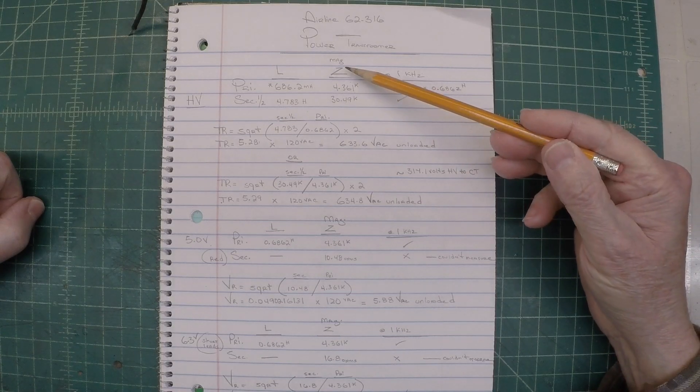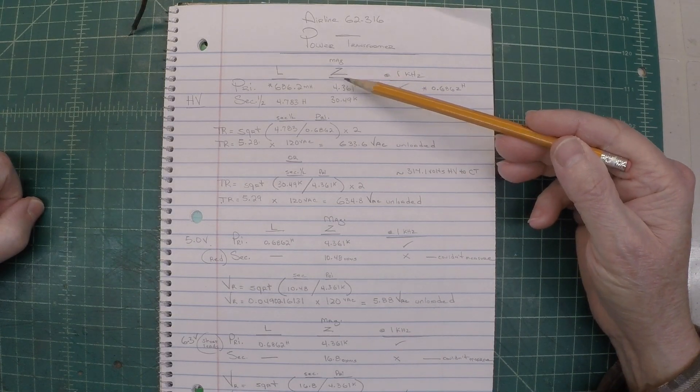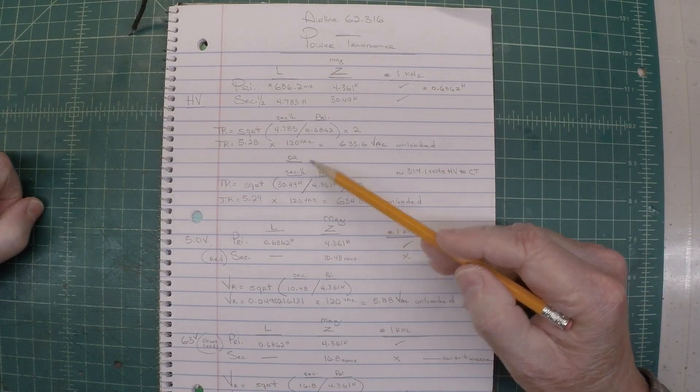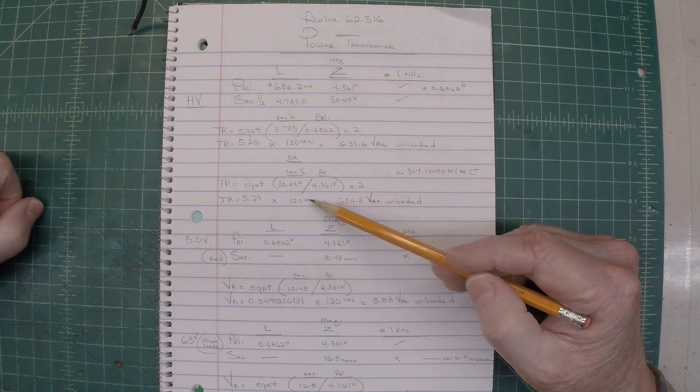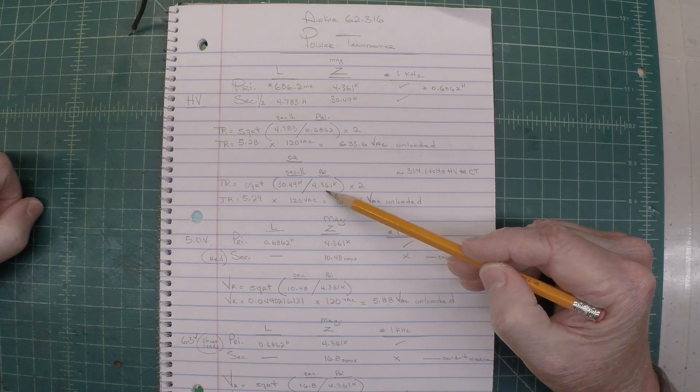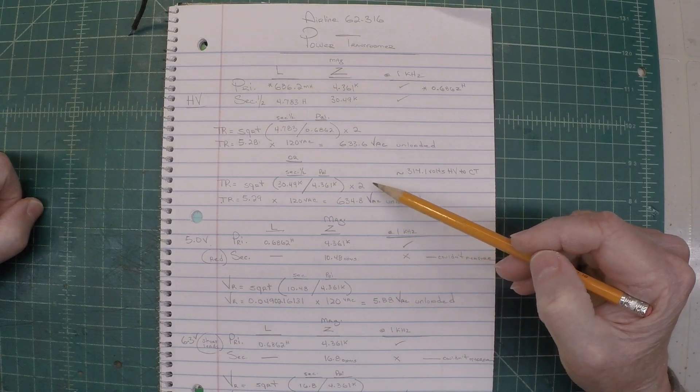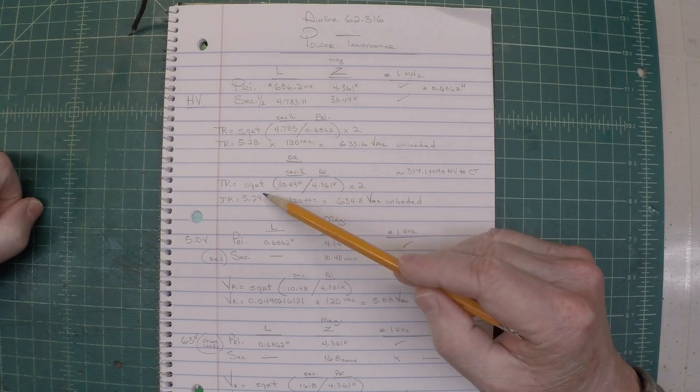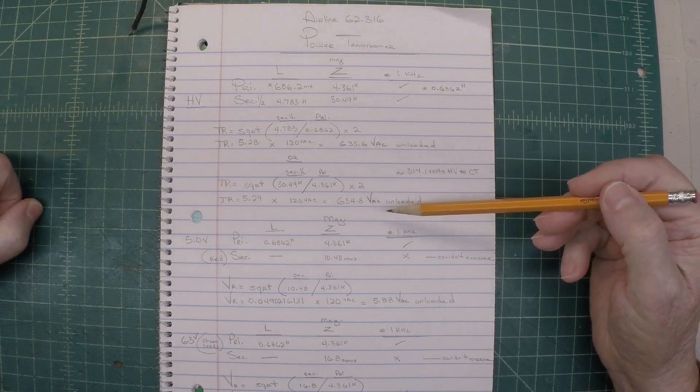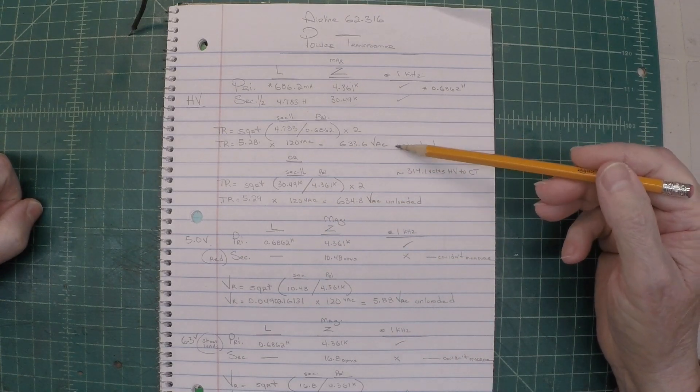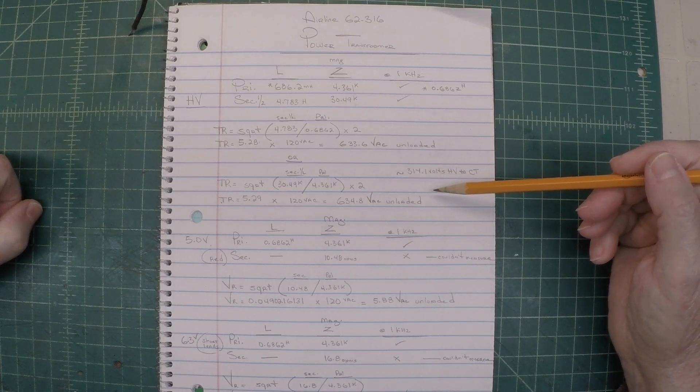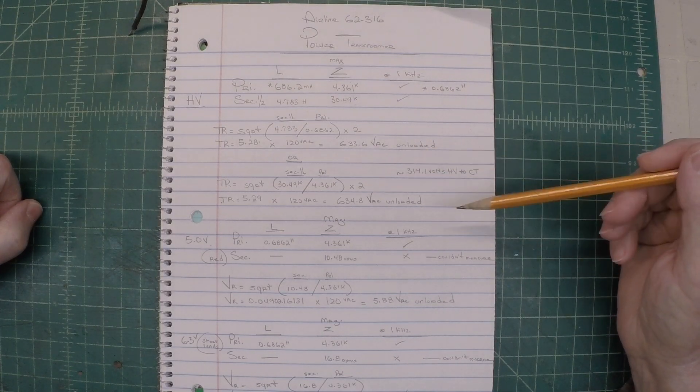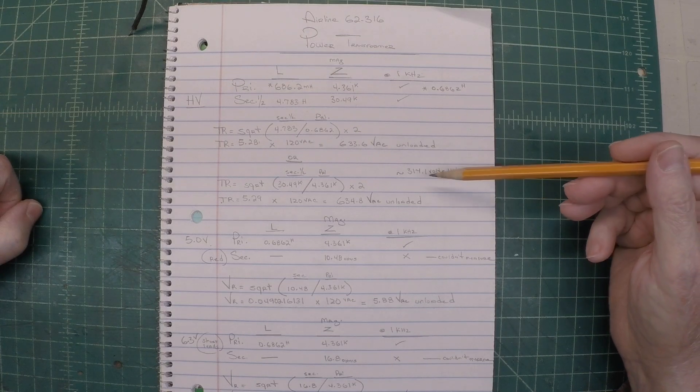I can also use the magnitude of Z impedance. Do the math the same way. Take the secondary, one half of that number, the 30.49 K, divided by 4361 times 2. You can see the numbers are extremely close. Turns ratio was 5.28. Now we're 5.29 times 120 comes out to 634.8. So an average between those around 317 volts high voltage from the center tap back to each winding is what I should see once the transformer is under power.